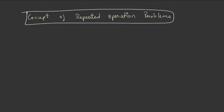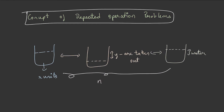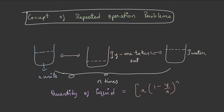Before solving repeated operation problems, let us understand the concept. Suppose a vessel contains x units of a certain liquid, from which y units are taken out and replaced with water. If this process happens n number of times, then the quantity of liquid remaining is given by the formula: x × (1 − y/x)^n.